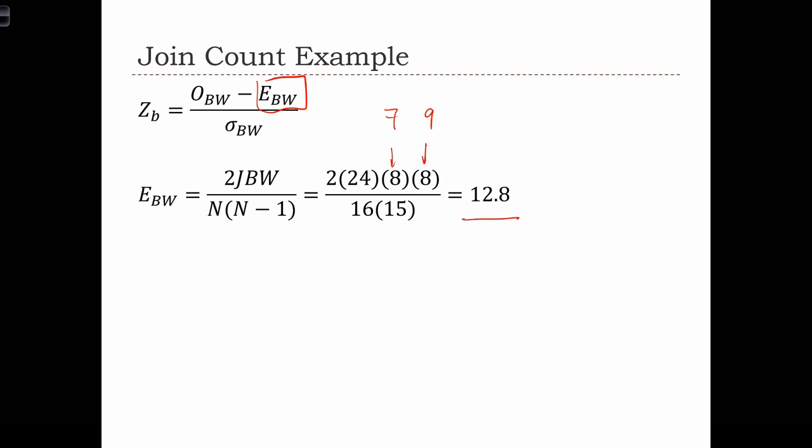And remember what I said, that when the distribution of black and whites is more even, so here it's perfectly even, we're going to have a larger expected number of black-white joints if the data were random. So before we had 12.3 in the case when black and white was 7 and 9. So the expected has gone up from that.